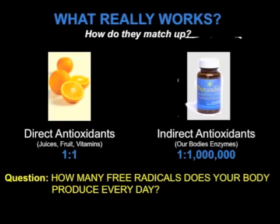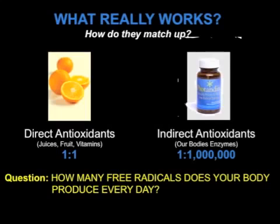When we're talking about indirect antioxidants — those enzymes made within your body — they work on a one-to-one-million ratio. One molecule of an antioxidant enzyme produced by your body will neutralize one million free radicals per second, every second, with the same enzyme, because it's a catalyst. It is not consumed as it is in the direct antioxidant approach.